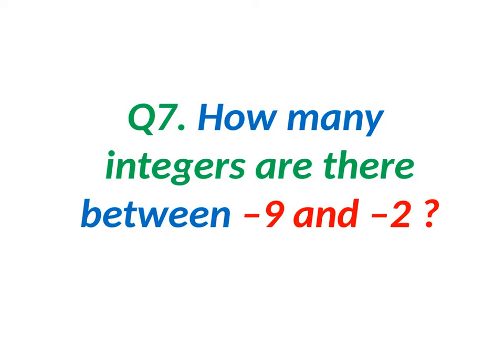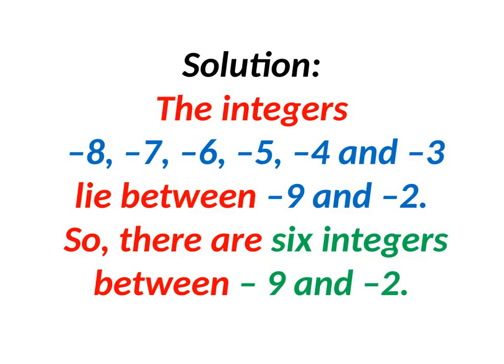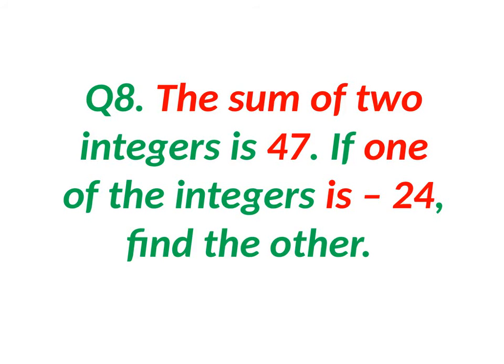How many integers are there between minus 9 and minus 2? Imagine the number line. Between minus 9 and minus 2 are: minus 8, minus 7, minus 6, minus 5, minus 4, and minus 3. There are 6 integers between minus 9 and minus 2. Let's see one more sum.